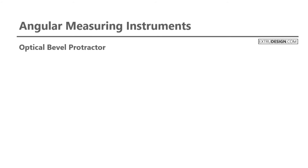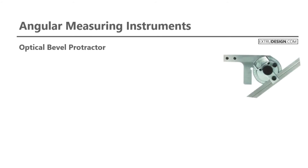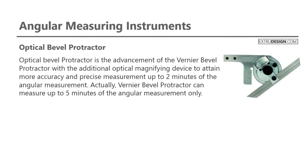The next one is the Optical Bevel Protractor. It is an advancement of the Vernier Bevel Protractor, with an additional optical magnifying device to attain more accuracy and precise measurement up to 2 minutes of angular measurement, since the Vernier Bevel Protractor can measure only up to 5 minutes.